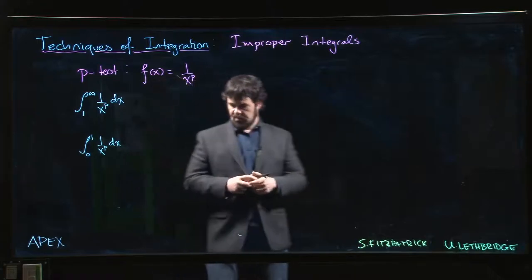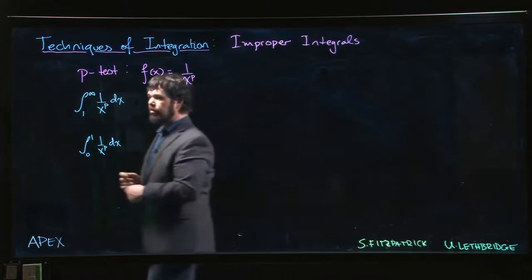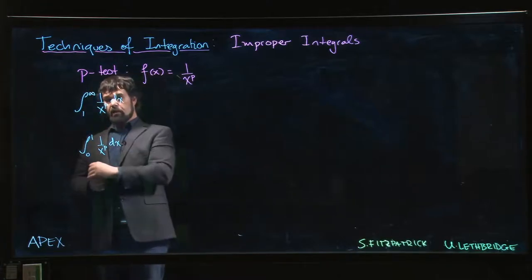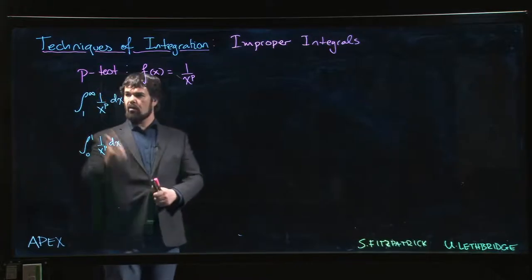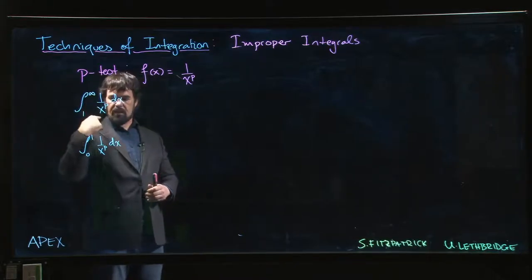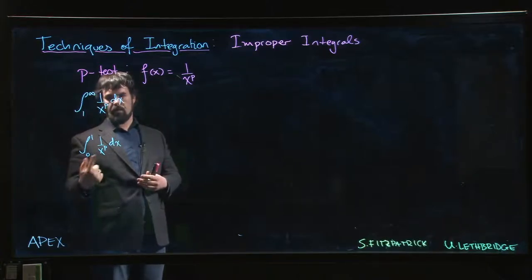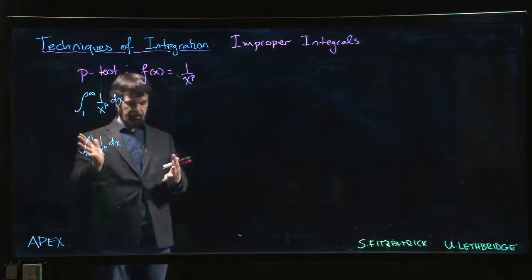So the boundary value for both cases is actually p equals 1. If p equals 1, the antiderivative for 1 over x is the natural log. The natural log goes to infinity as x goes to infinity. The natural log also goes to minus infinity as x goes to 0. So for p equals 1, both types of integrals diverge.